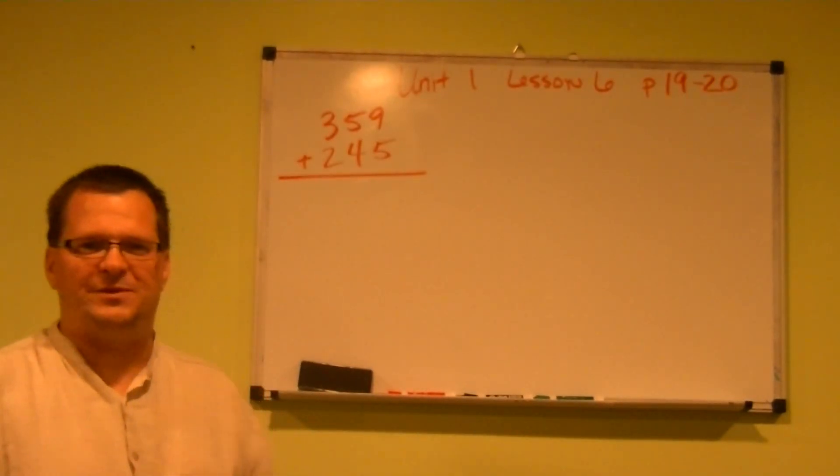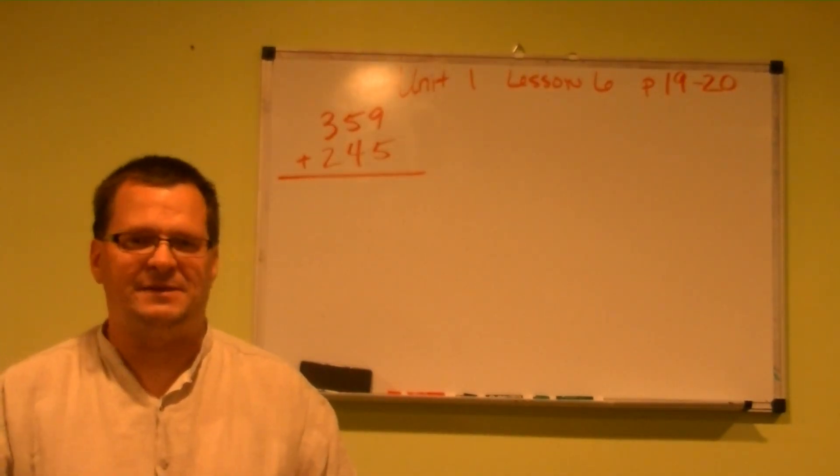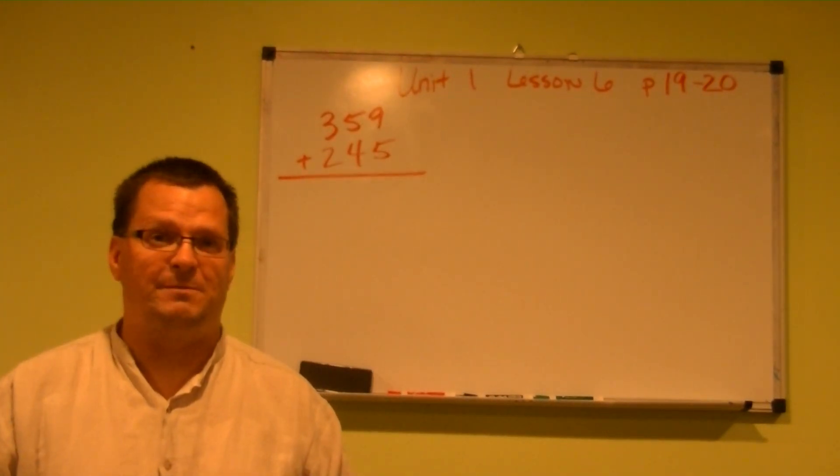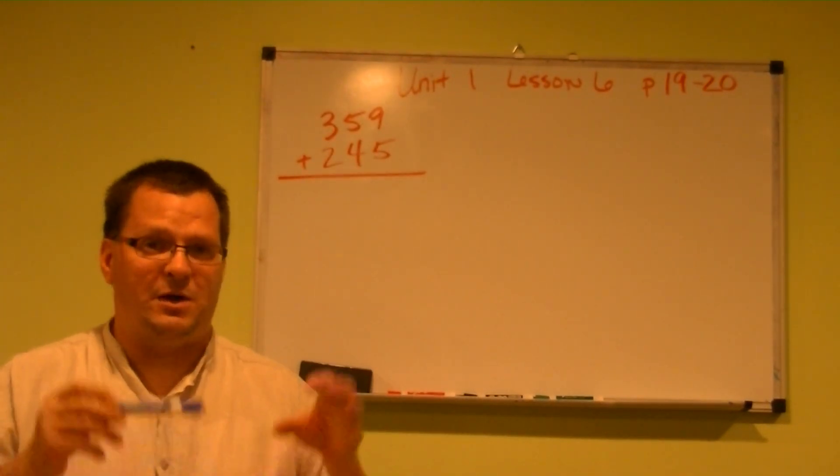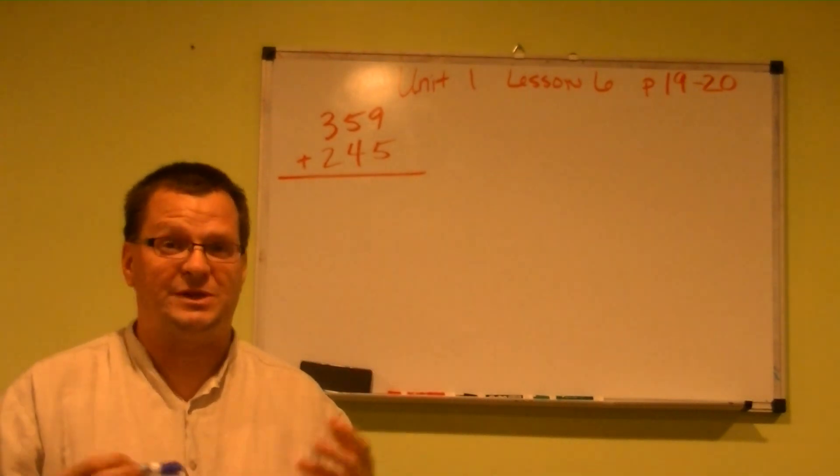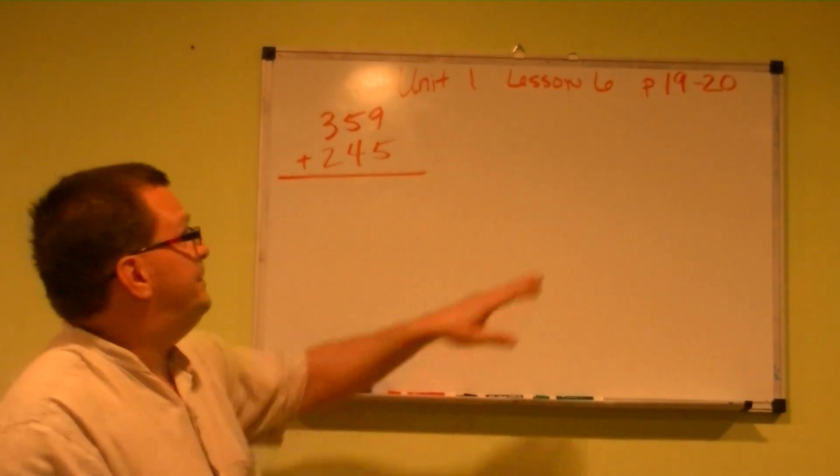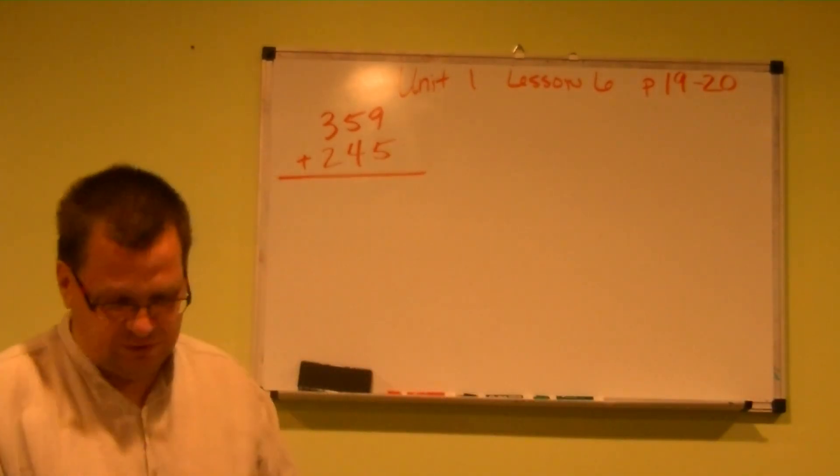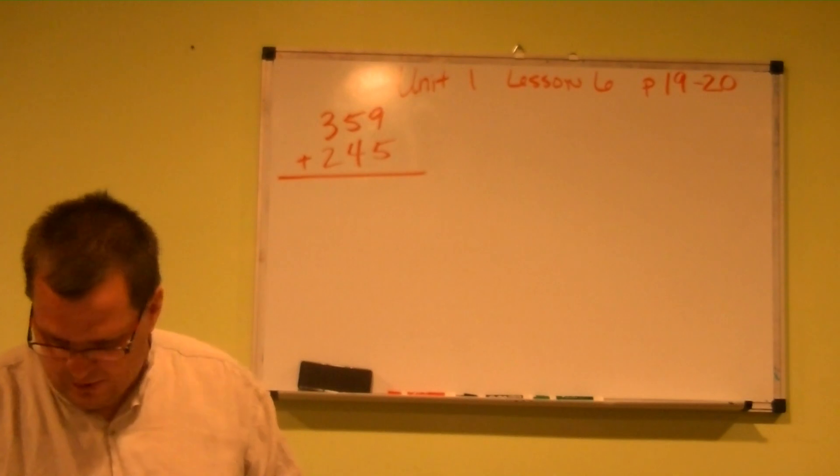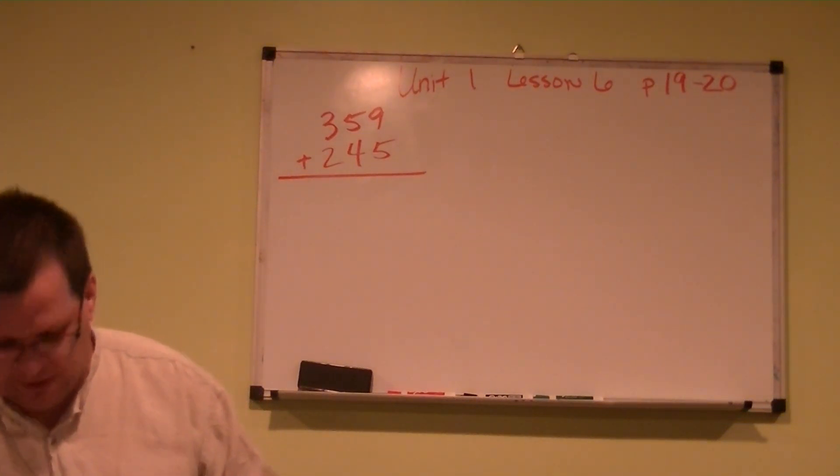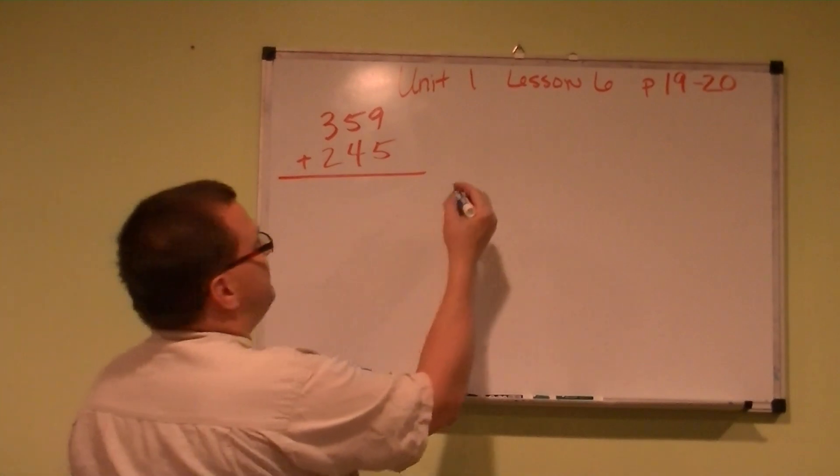Now that we've talked about proof methods in the previous couple days, this time we're going to actually answer this problem using the proof method. So all those ten bases that we've been using, we're going to do a little bit differently. In Unit 1 Lesson 6 on your page 19 and 20, let's talk about number 1. There are 359 cars and 245 trucks in the parking garage. How many vehicles are in the garage?